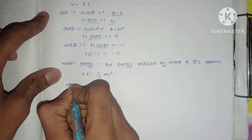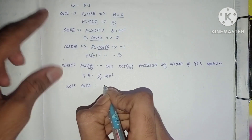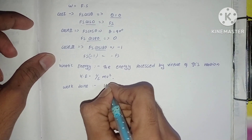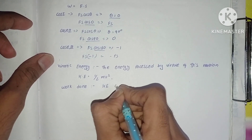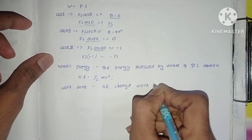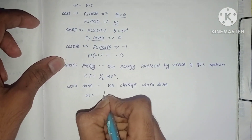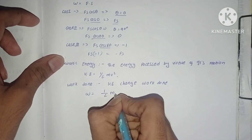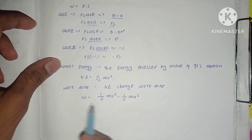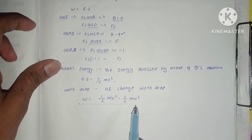Now let us know the definition of work done. Work done is equal to the change in kinetic energy. We need to prove that W = ½mv² − ½mu².